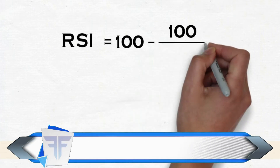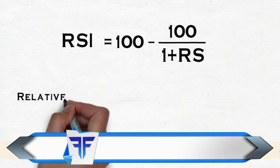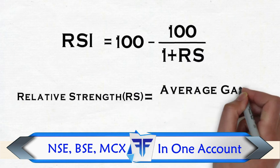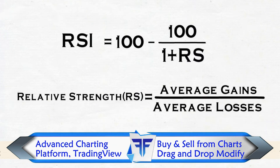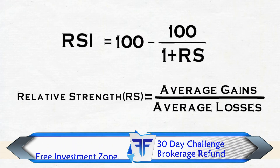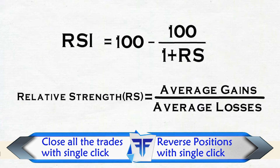To calculate RSI, we should take the closing prices of the script. RSI is equal to 100 minus 100 divided by 1 plus RS. Relative Strength, i.e. RS, is equal to Average Gains divided by Average Loss. Average Gain means the average gain in the closing price for the number of periods taken. Similarly, Average Loss means the average loss in the closing price for the number of periods taken.